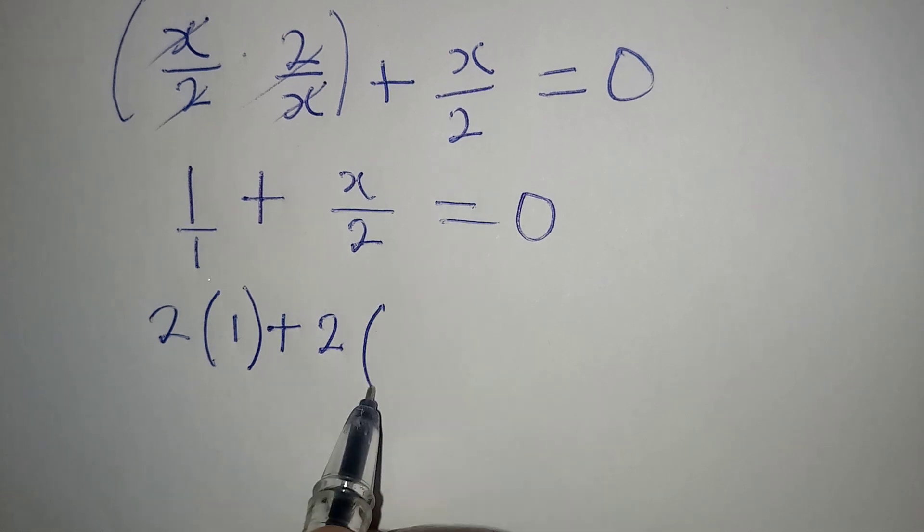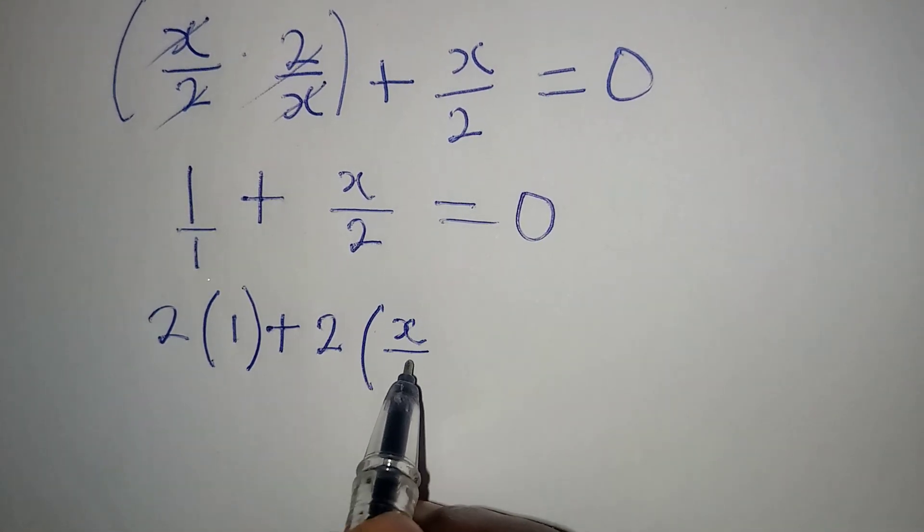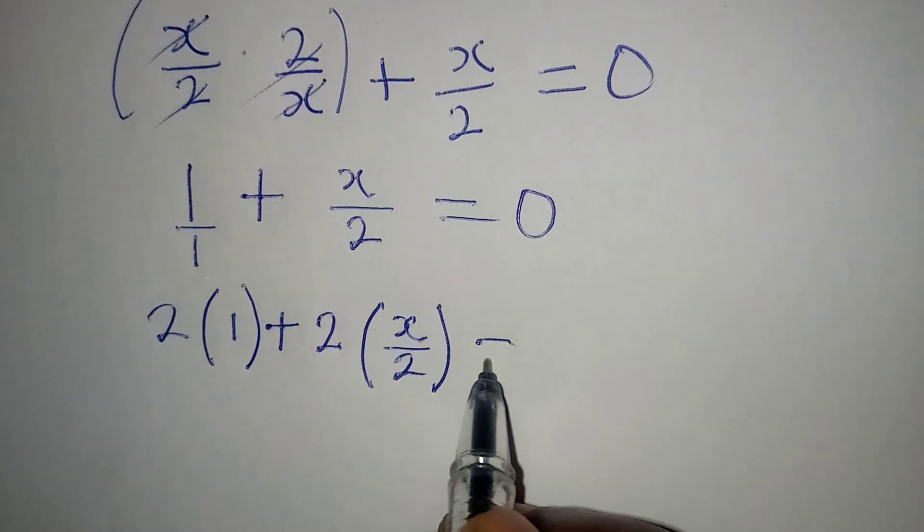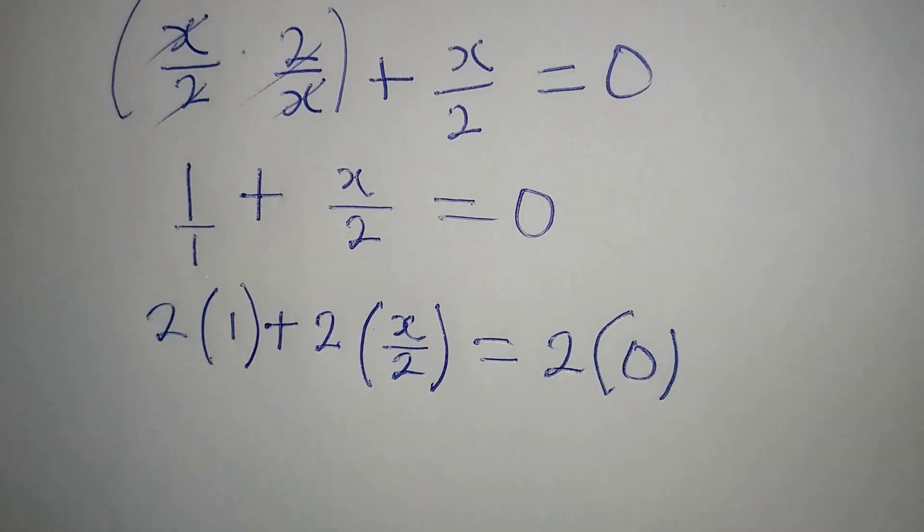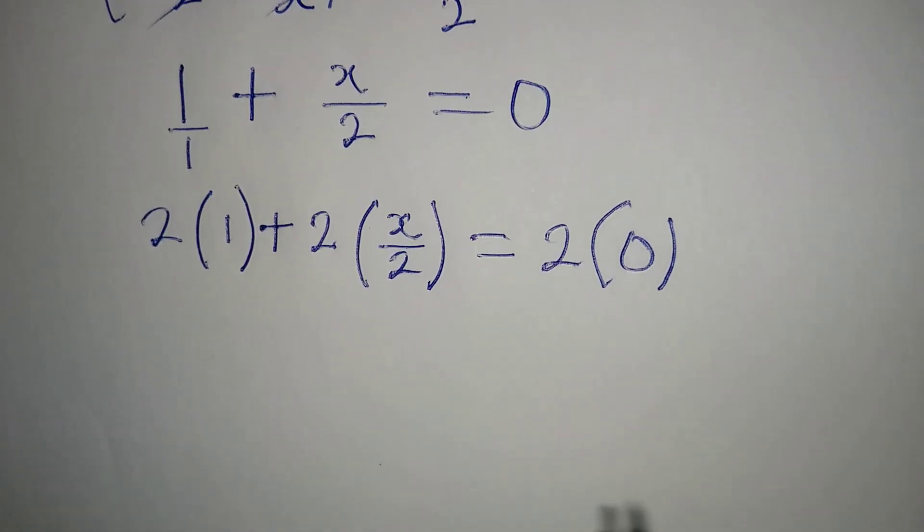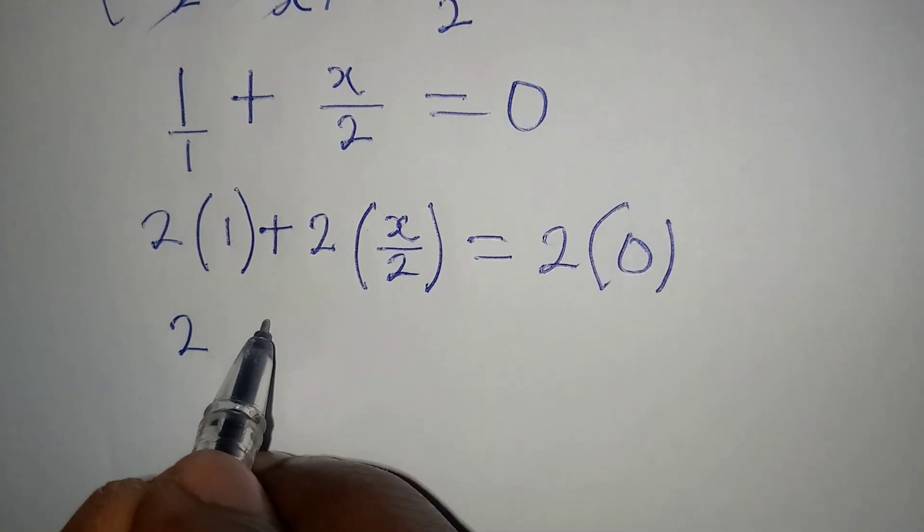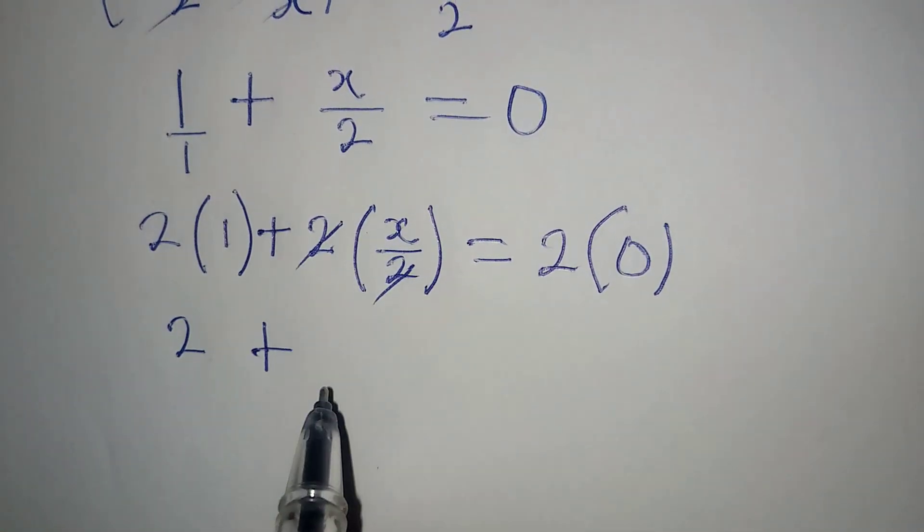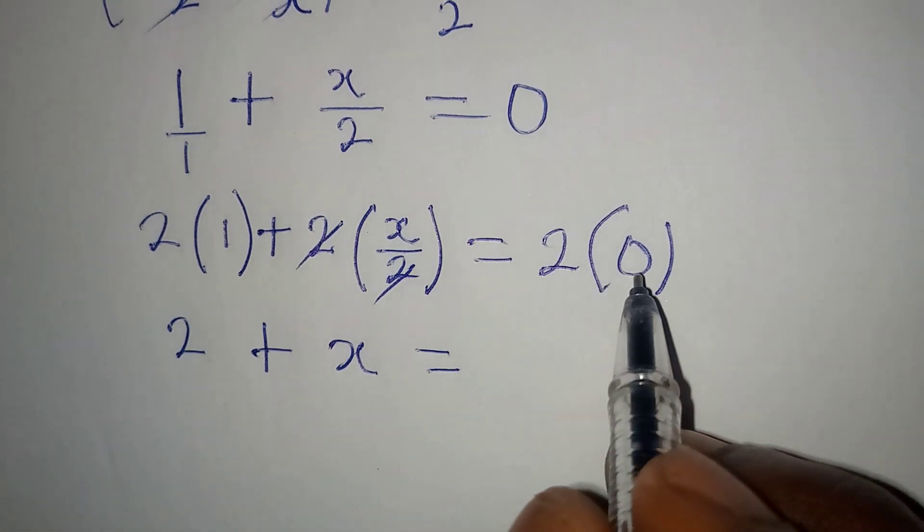2, the LCM, multiplied by x over 2, and then equal to 2, the LCM, multiplied by 0. So from here we'll have 2 plus x, which is equal to 0.